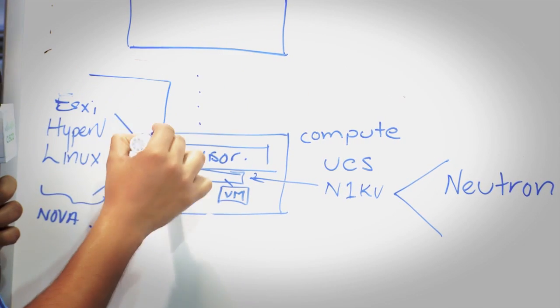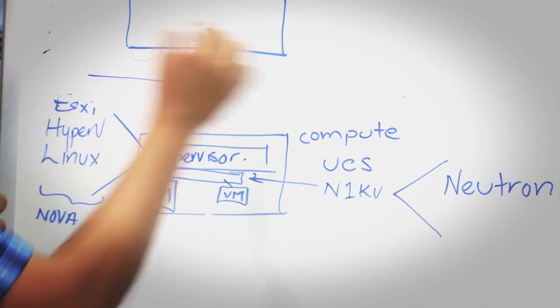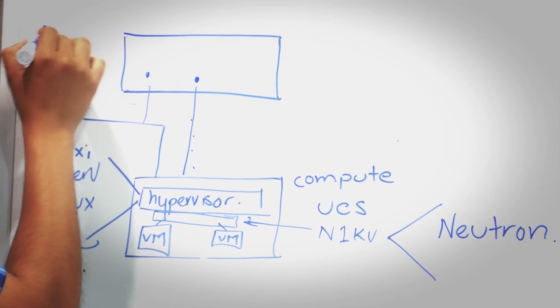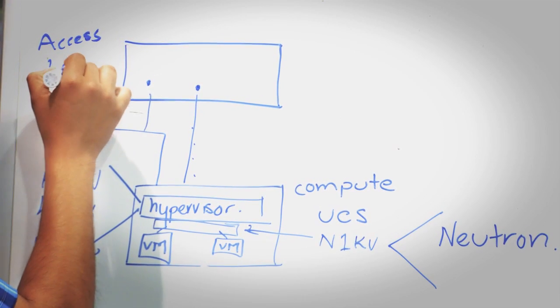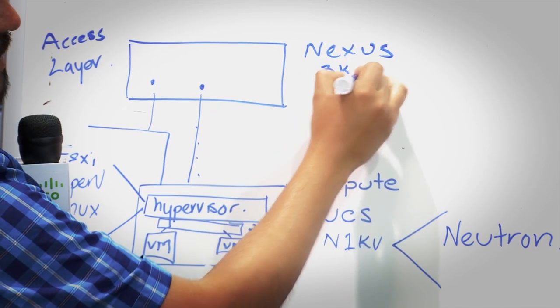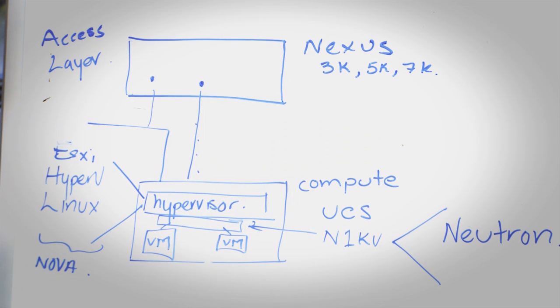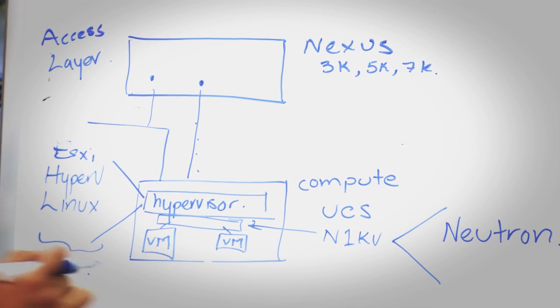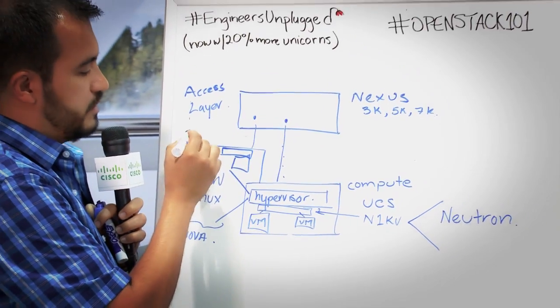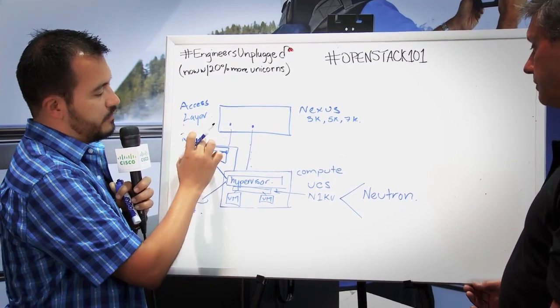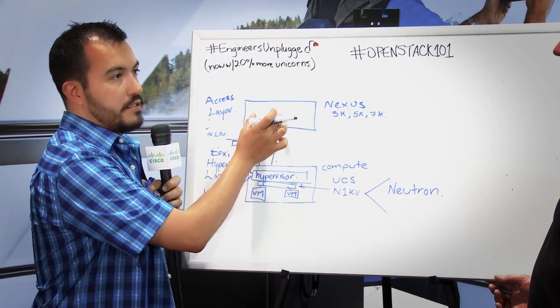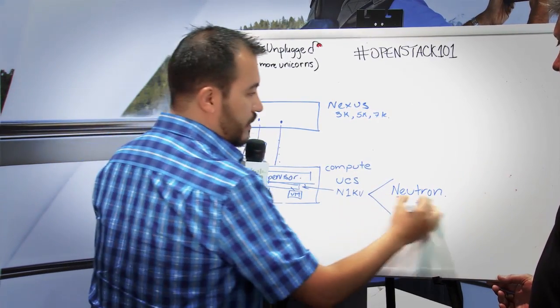So when you have one more compute, basically you need to have connectivity all the way to the physical layer, which is the access layer. So we have the Nexus family here, it could be the 3K, 5K, even the 7K. So now you need to have a way where a new VM connected here wants to be connected here. You have covered in this here again with Nexus 1KB. But now you need to have some kind of protocol configuration when you are talking about two different computes connected to the same switch, right? That is also covered by Neutron.